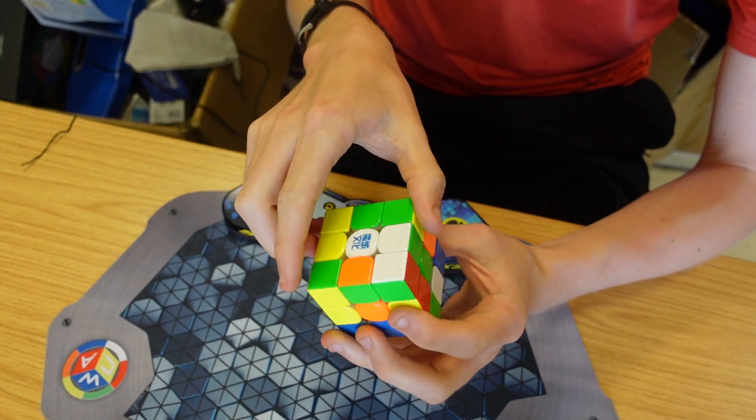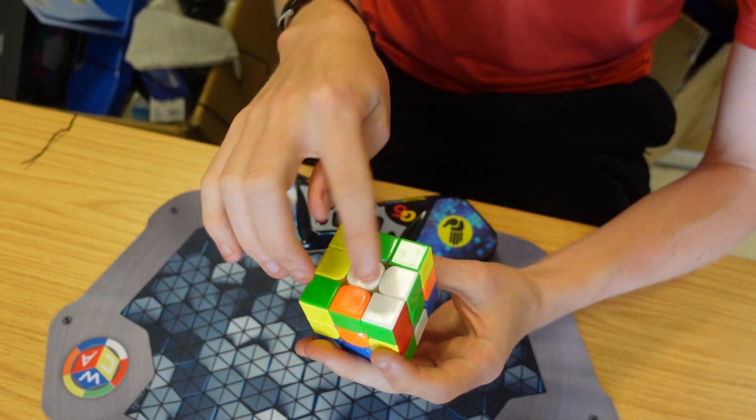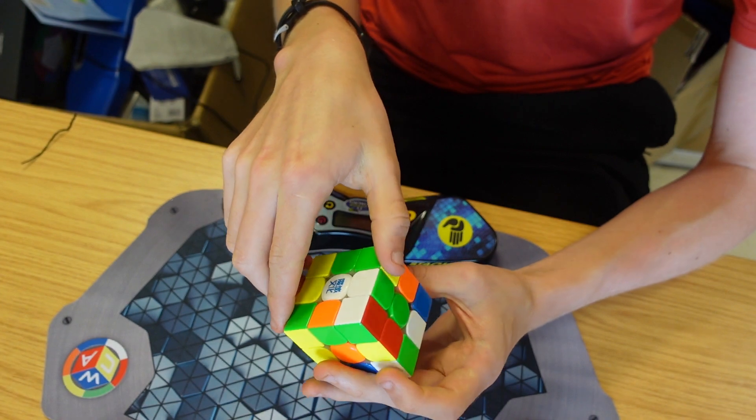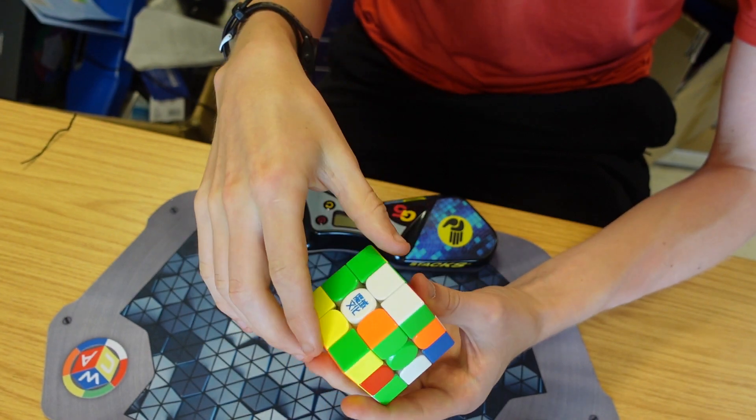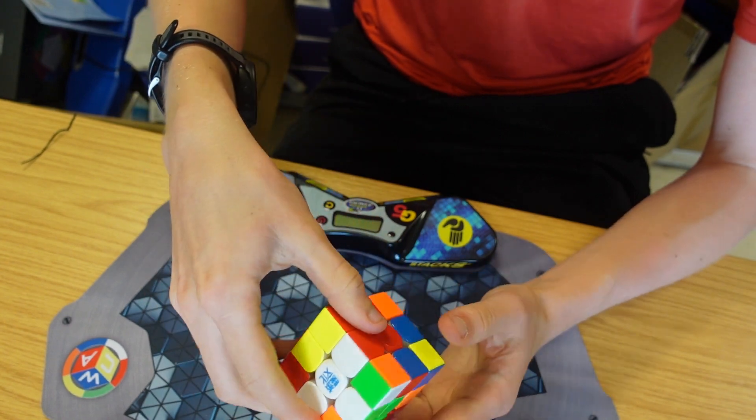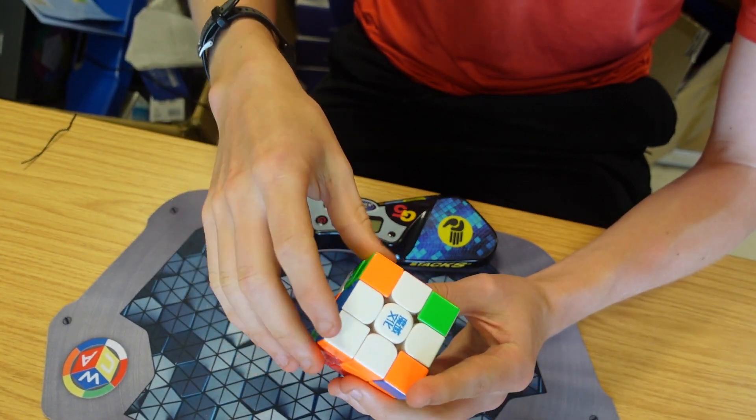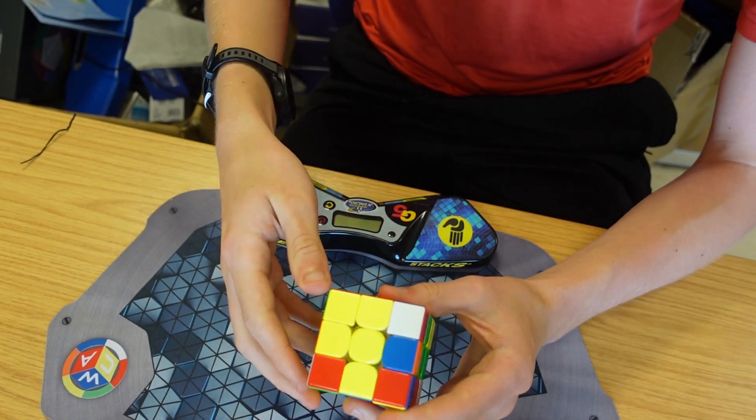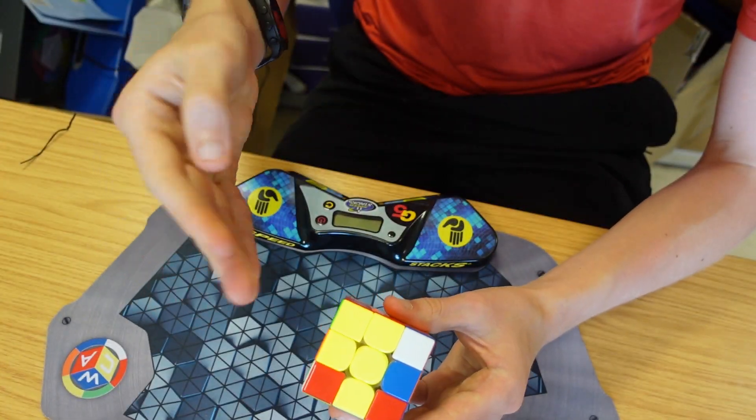I'm going to solve the cross directly onto the top. This saves time but it's also slightly more confusing. We're going to move this cross edge here, insert this cross edge, then put that on the top there, and finally get this cross edge in.